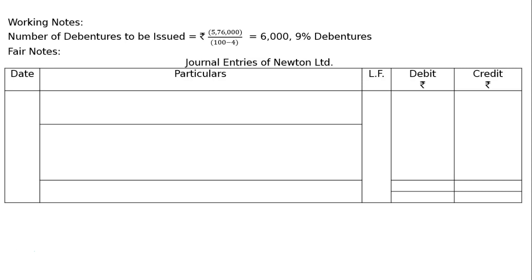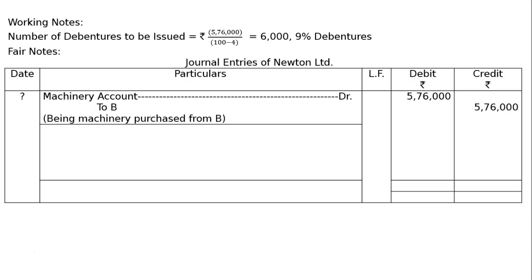Journal entries of Newton Limited. First entry: after drawing the format, we have to record the purchase of machinery from B, the vendor. Machinery account is debited and B account is credited with ₹5,76,000. Being machinery purchased from B.